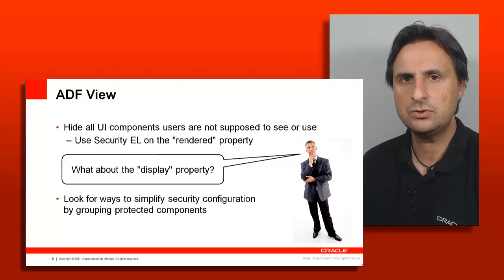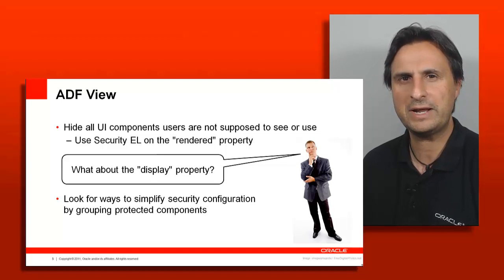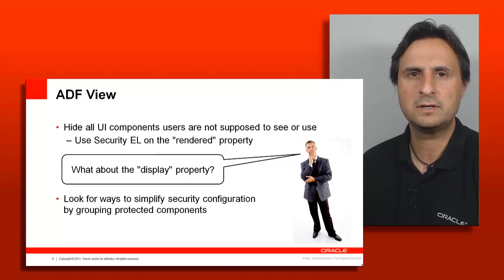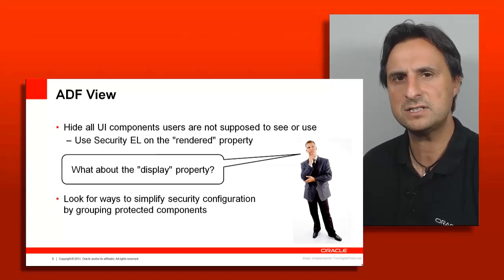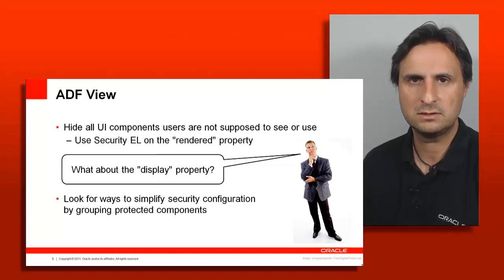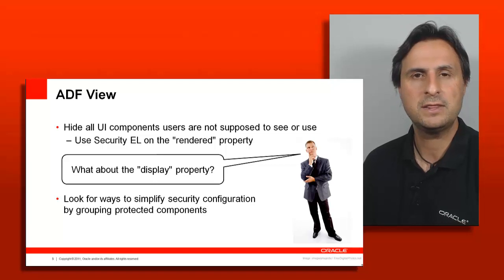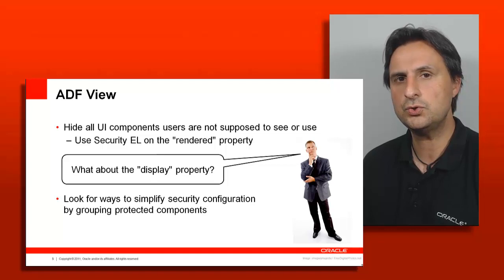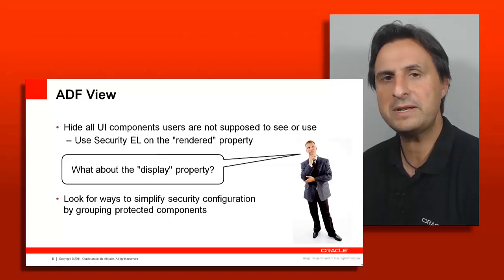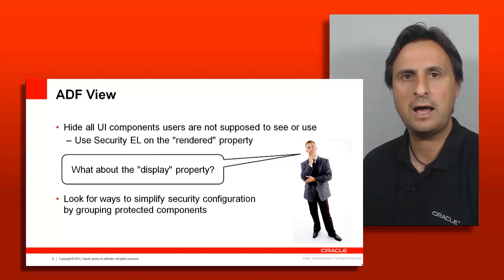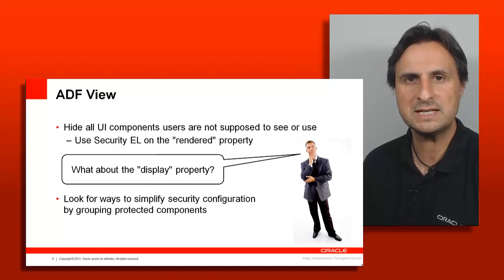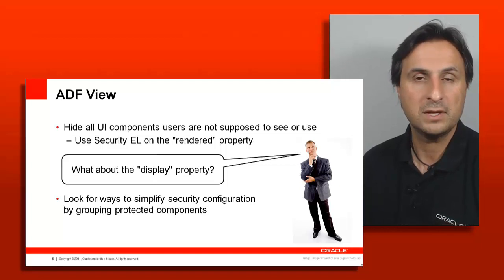A common issue is applications that gray out components — menu commands or UI elements — that the user isn't authorized to use. This immediately signals to a potential attacker what they need to activate to see what's underneath. Instead, the recommendation is to hide components and menu options that users are not supposed to use. Use expression language with ADF security on the rendered property so that a button is simply absent when the user lacks permission and visible once authenticated with the right privileges.